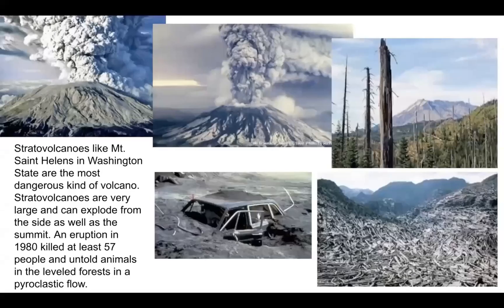Here's a really dangerous kind called a stratovolcano, like Mount St. Helens in Washington. These are the most dangerous kind — they're very large and can explode as well as erupt. The eruption in 1980 of Mount St. Helens sent ash hundreds of miles into the air. It produced what's called a pyroclastic flow — lava mixed with gases and ash — which killed 57 people, buried cars, and leveled a forest all around, killing all the animals and birds.